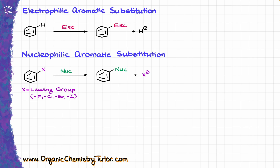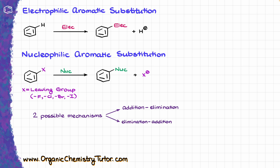There are two possible mechanisms for nucleophilic aromatic substitution. One is the addition-elimination reaction, while the other is the elimination-addition. In this video we are going to focus on the addition-elimination mechanism, which is the main mechanism you'll see in the scope of your course, although we'll talk about the other one as well.